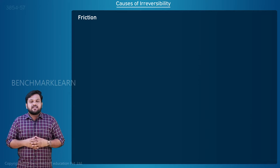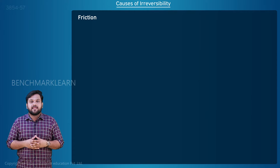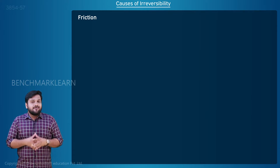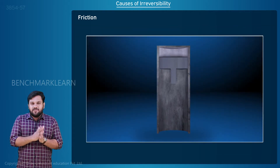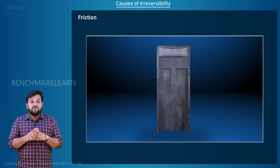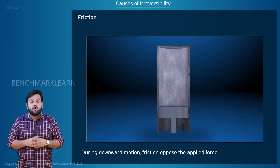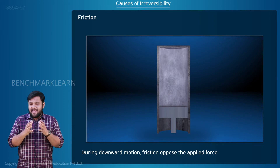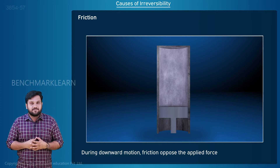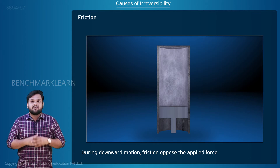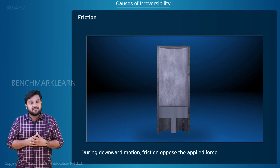Friction is the resistance to motion when two solids in contact have relative motion between them. Consider a piston-cylinder arrangement. When the piston moves inside the cylinder, a friction force develops at the interface. This friction force opposes the motion. So some extra work is needed to overcome this frictional force. This work supplied is eventually converted to heat energy at the interface, and the interface heats up.